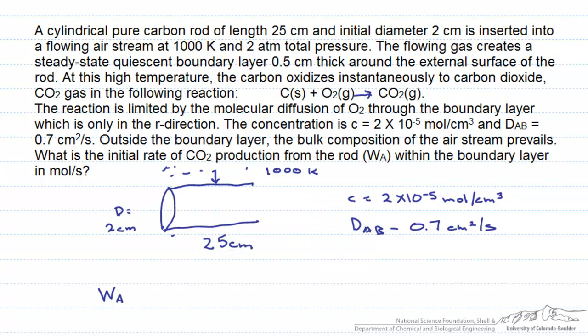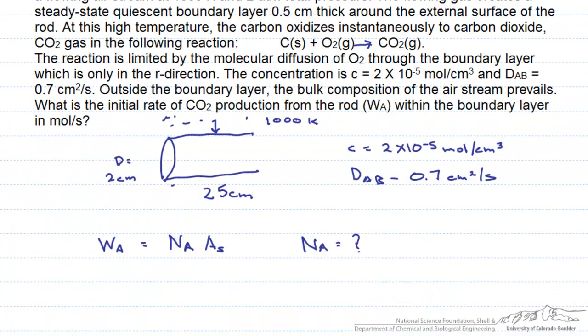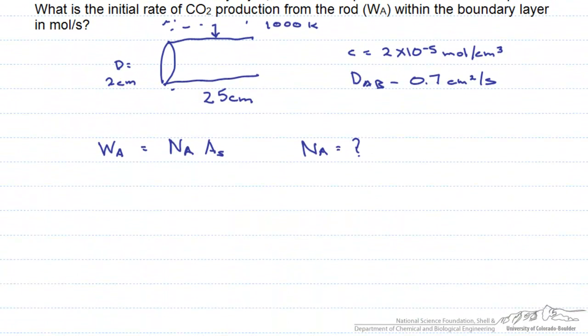To solve the problem, we are going to use the fact that this rate of production is equal to the flux of A times the surface area. We have to find this flux of A, N sub A.